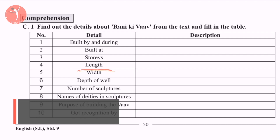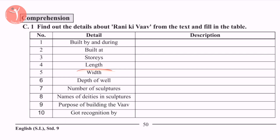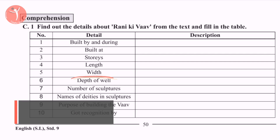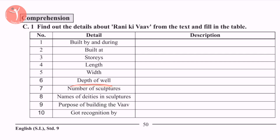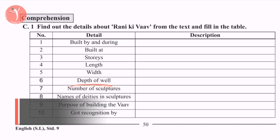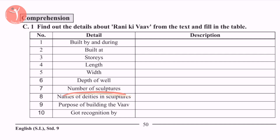The width of Rani ki Vav is 20 meters, and the depth is 27 meters below.